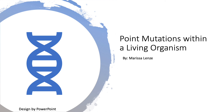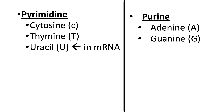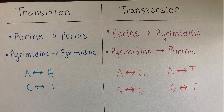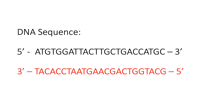In this video, I will be describing point mutations in DNA sequence after going through transcription and translation. A purine is adenine and guanine, and a pyrimidine is cytosine and thymine, or uracil if in mRNA. A transition mutation is when nucleotides change from a pyrimidine to a pyrimidine or a purine to a purine. A transversion mutation is when nucleotides change from a pyrimidine to a purine or a purine to a pyrimidine.